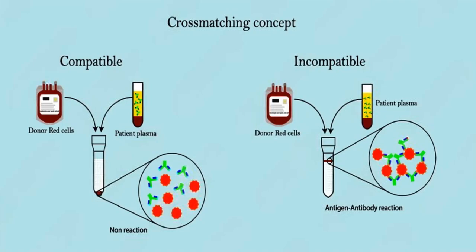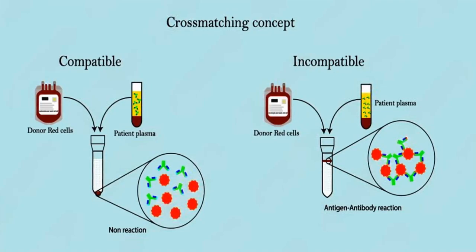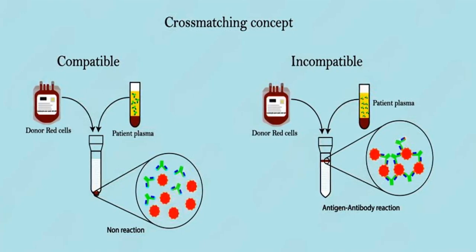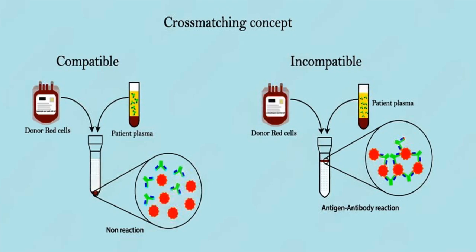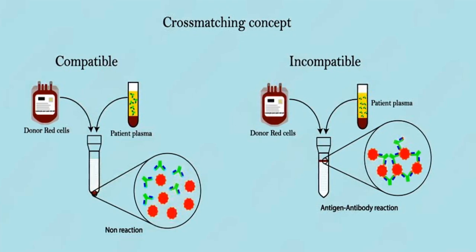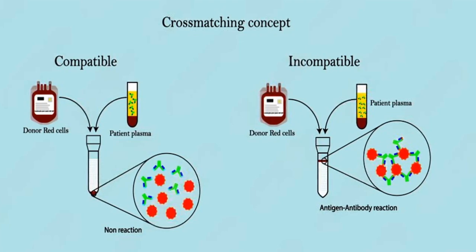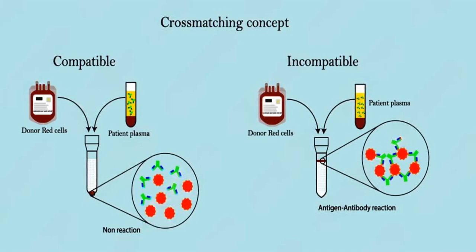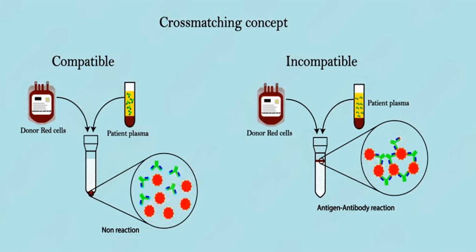Number 6. Why are blood groups important? Blood groups are important because they ensure compatibility in blood transfusions and organ transplants, preventing severe immune reactions. They are also critical during pregnancy to manage RH incompatibility, which can harm the baby. Additionally, understanding blood groups is essential for safe blood donation, forensic identification, and studying genetic and population diversity.